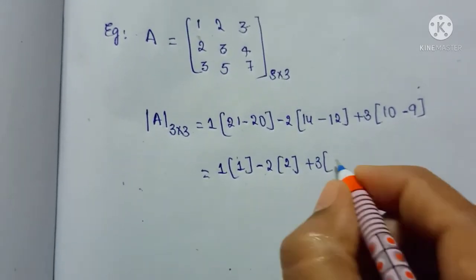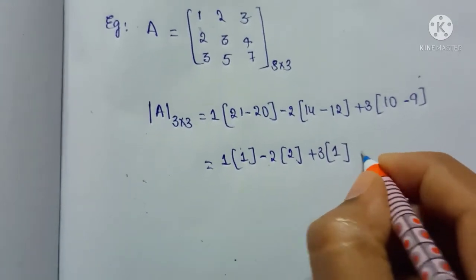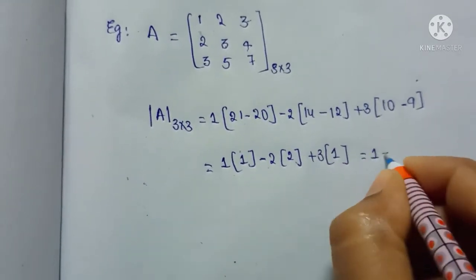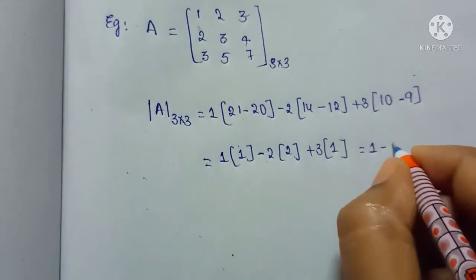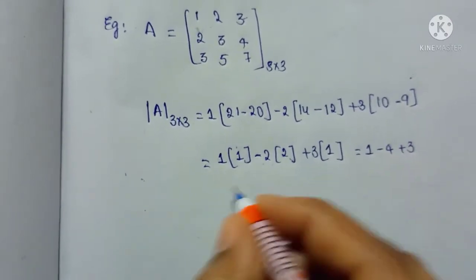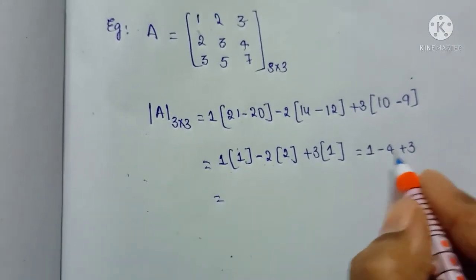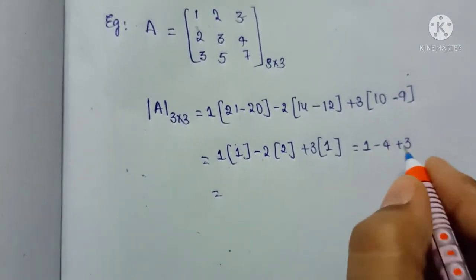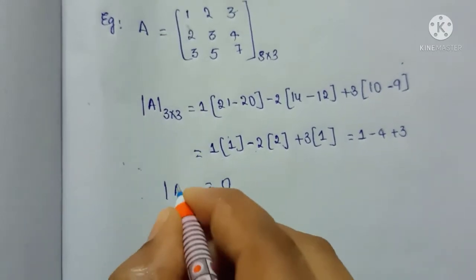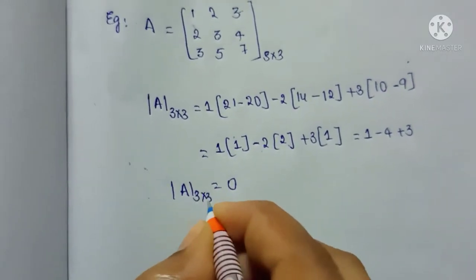That gives us: 1×1 = 1, minus 2×2 = 4, plus 3×1 = 3. So 1 − 4 + 3 = 0. The determinant of the 3×3 matrix is equal to 0, so the rank is not 3.